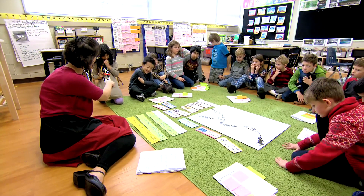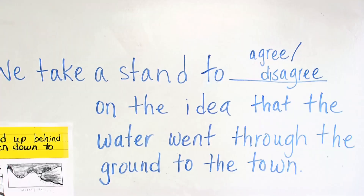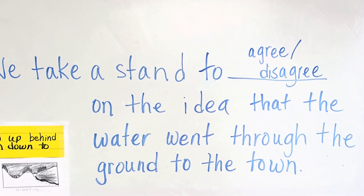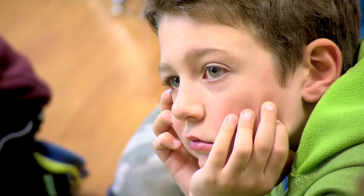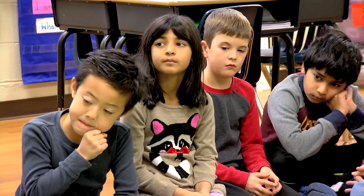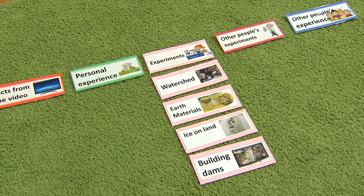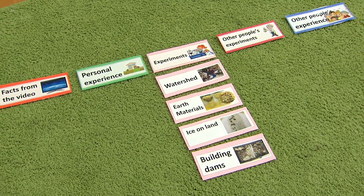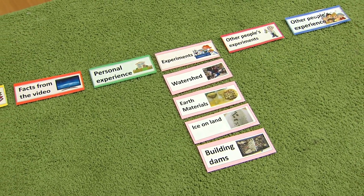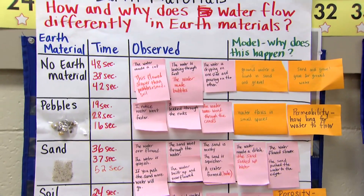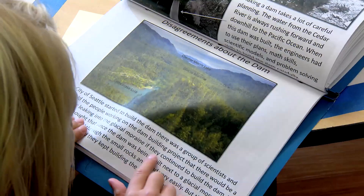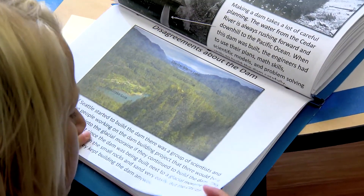You're going to tell me whether you agree or disagree on the idea that the water went through the ground to the town. I know this because — and you're going to tell me what evidence you have to support that idea. When you're making an evidence-based argument, you are rallying evidence from multiple sources, and this is an important skill for students to have not just in science but in social studies, literacy, and mathematics.